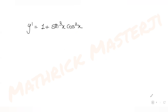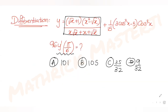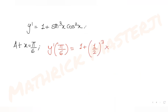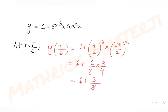The question asks for y'(π/6). Substituting x = π/6: y'(π/6) = 1 + sin³(π/6)·cos²(π/6). sin(30°) = 1/2, so sin³(π/6) = 1/8. cos(30°) = √3/2, so cos²(π/6) = 3/4. Therefore y'(π/6) = 1 + (1/8)·(3/4) = 1 + 3/32 = 35/32.